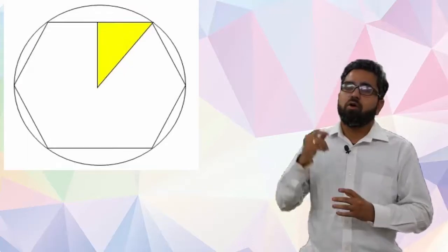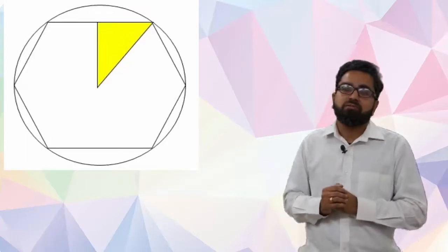Now but that will require us to know the exact value of theta for different values, so let's say 360 by n. If n is 6 then it can be found out very easily, but in case of n being a prime number it is very difficult to find.